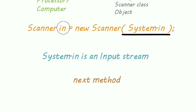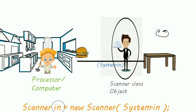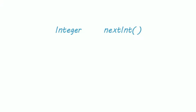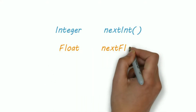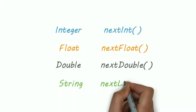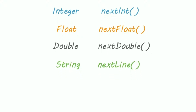Now the next step is using the next method. Imagine the next method as ordering more dishes, or ordering dessert after your meal. Suppose I want to input an integer — I'll use nextInt. For float, we'll use nextFloat. For double, we'll use nextDouble. And for String, we'll use nextLine. This is getting a bit confusing, so let's see all this on our IDE.